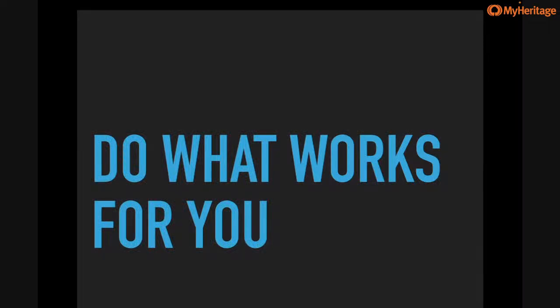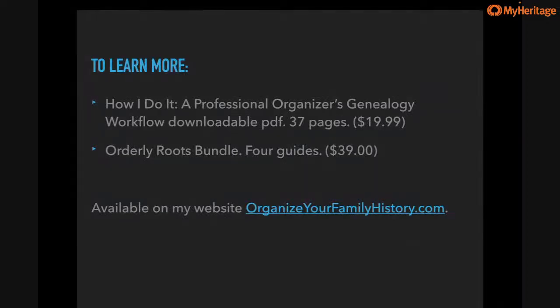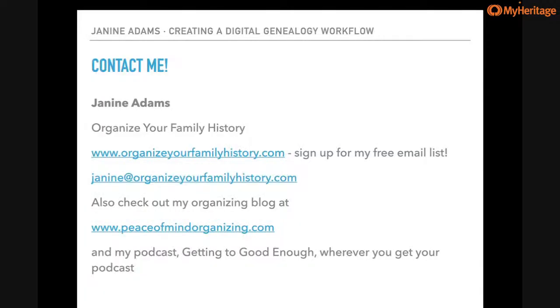I have a guide called How I Do It: A Professional Organizer's Genealogy Workflow — it's 37 pages, a downloadable PDF for $19.99. It's one of four guides I've bundled into the Orderly Roots Bundle for $39. All are available at OrganizeYourFamilyHistory.com. If you'd like to reach out, use the contact form there. Please sign up for my free email list — you'll get a series of emails and a monthly email listing my recent blog posts. You can also find my home organizing work at PeaceOfMindOrganizing.com, and my podcast Getting to Good Enough at gettingtogoodenough.com.